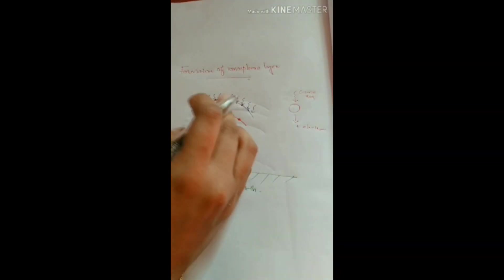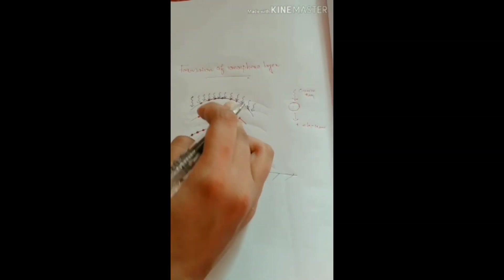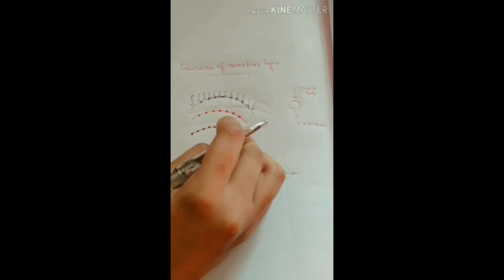The number of ions is less in the top region, and as we move downward, the density of ions increases.